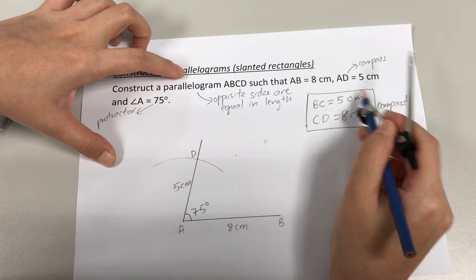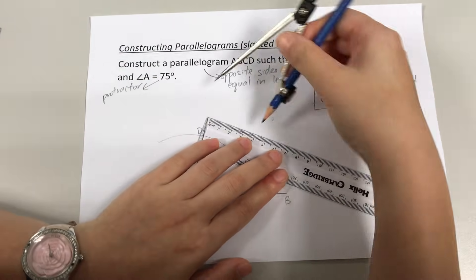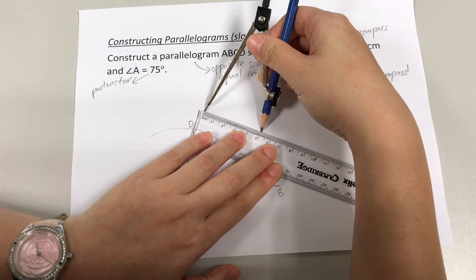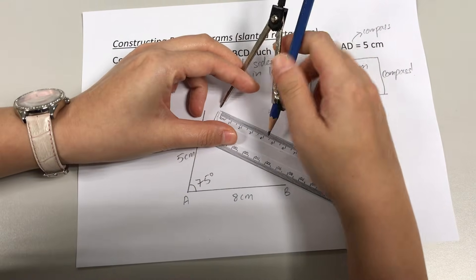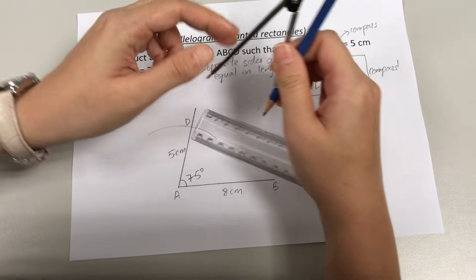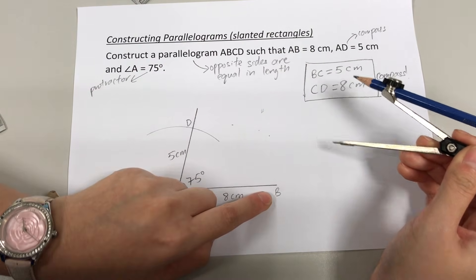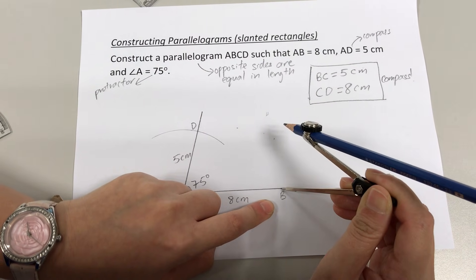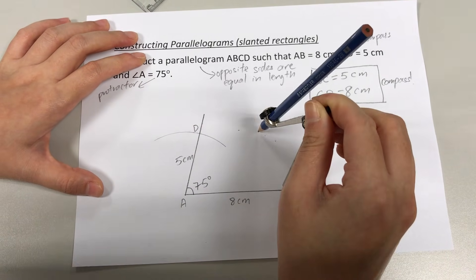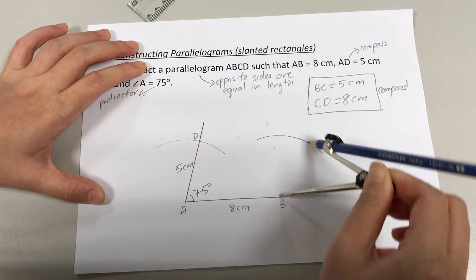I am going to start off with drawing BC 5 cm using my compass. I am going to check that my compass is open to 5 cm, which it still is. Let me just adjust it slightly. So that's 5 cm. That is to draw BC, so I am going to place my needle at point B. I place my needle at point B like this and I am going to draw a curve.